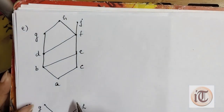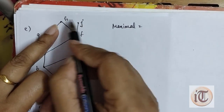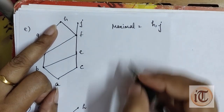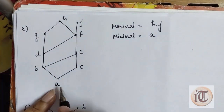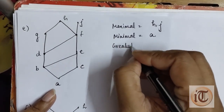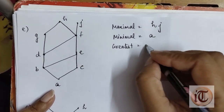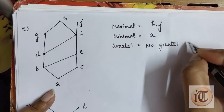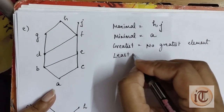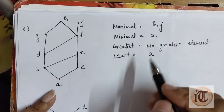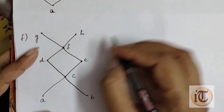For another given Hasse diagram, the maximal elements are the top elements h and j. The minimal element is a, the only bottom element. For greatest, we have more than one maximal element so there is no greatest element — no unique element exists. For least, a is the only element in the minimal case, so a is a unique element and the least element is a.